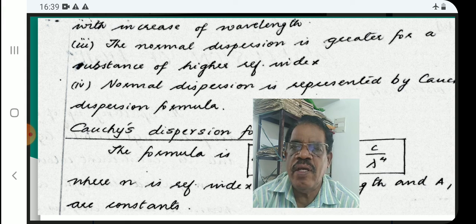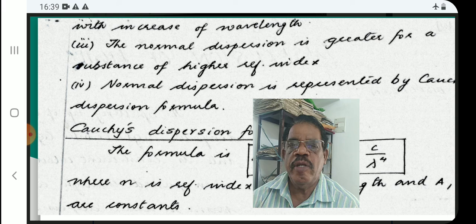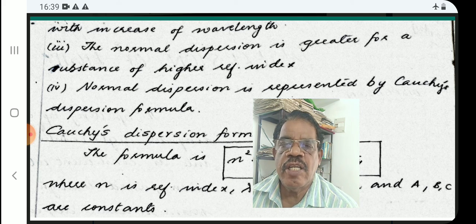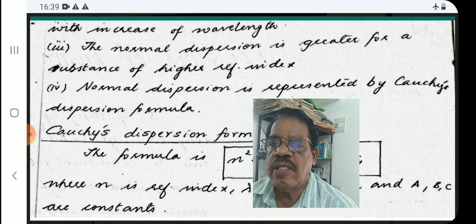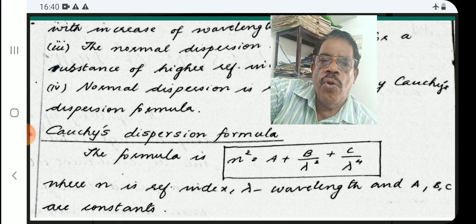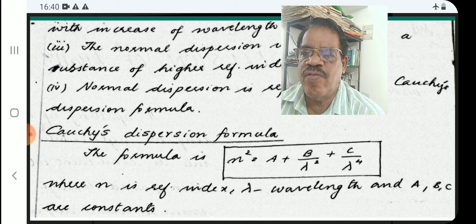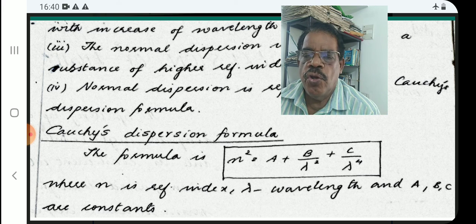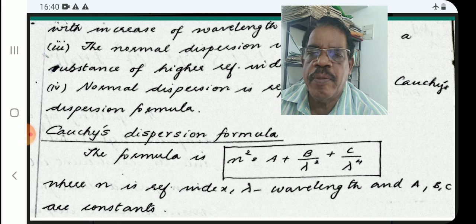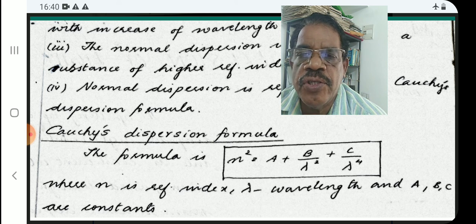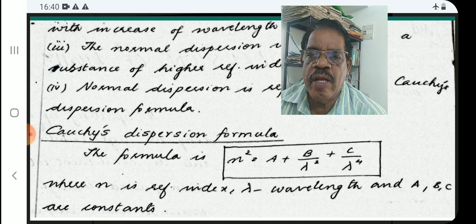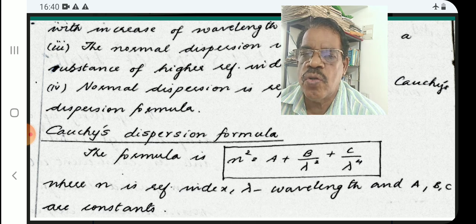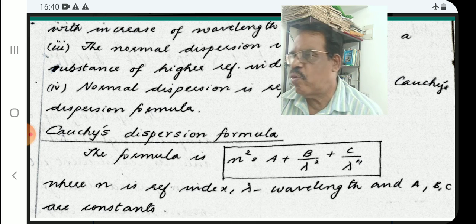Number four: normal dispersion is represented by Cauchy's dispersion formula. The formula is: n² = A + B/λ² + C/λ⁴, where n is the refractive index, lambda is the wavelength, and A, B, C are constants. This relation is very important and it is also used for practical classes.